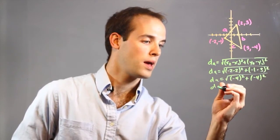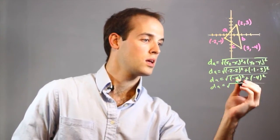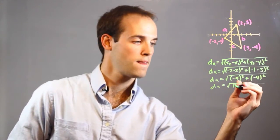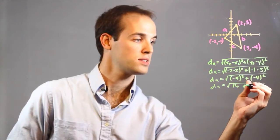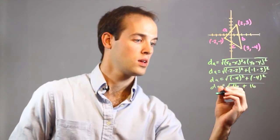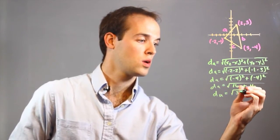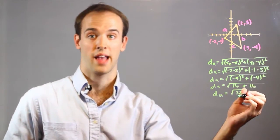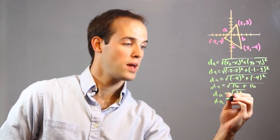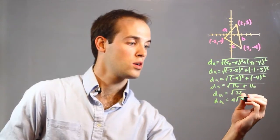And then we just solve. D sub A equals negative 2 minus 2, which is negative 4, squared, plus negative 1 minus 3, which is negative 4, squared. So D sub A equals negative 4 squared, which is 16, plus negative 4 squared, again 16 — that's the square root of 32, which I can simplify by pulling out the square root of 16. So I get D sub A equals 4 root 2.